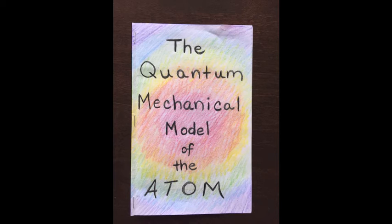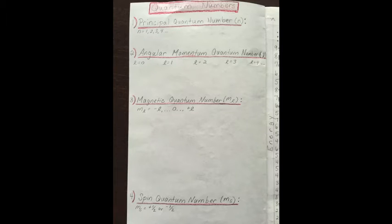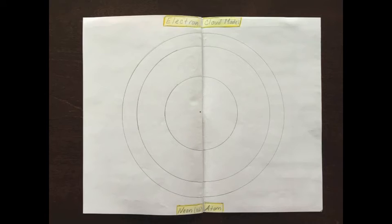The title of the booklet will be 'The Quantum Mechanical Model of the Atom.' On your first two pages you'll have quantum numbers and an orbital diagram. The four quantum numbers listed are the principal, angular momentum, magnetic, and spin quantum numbers. Then you'll build an orbital diagram on the right that will go from 1s all the way to 9s.